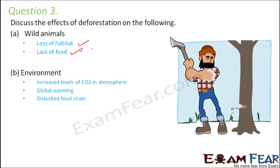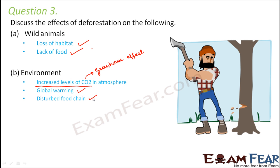Effects on the environment: when a large number of plants are cut down, there is no one to absorb carbon dioxide from the atmosphere, so carbon dioxide increases. This results in global warming, because carbon dioxide is a greenhouse gas that absorbs infrared radiation, increasing the average temperature of the earth. It will also disturb the food chain, since many animals are directly or indirectly dependent on plants for food.